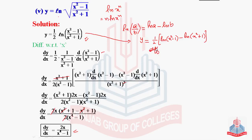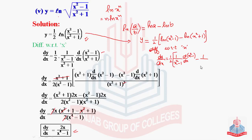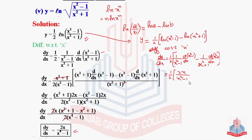Starting differentiation from here with respect to x: dy/dx = (1/2) times [the derivative of log(x² - 1), which is 1/(x² - 1) times the derivative of (x² - 1), minus the derivative of log(x² + 1), which is 1/(x² + 1) times the derivative of (x² + 1)]. The derivative of (x² - 1) is 2x and the derivative of (x² + 1) is 2x. Taking 2x as a common factor, we have 1/(x² - 1) minus 1/(x² + 1).